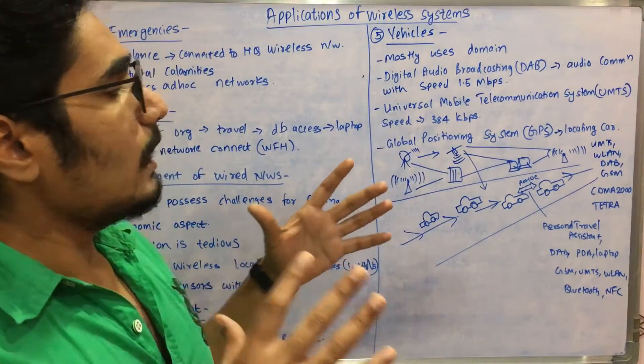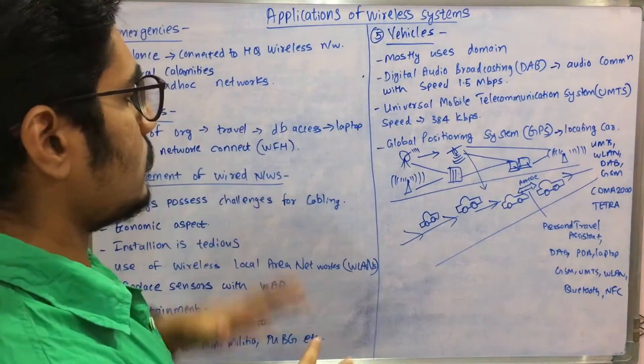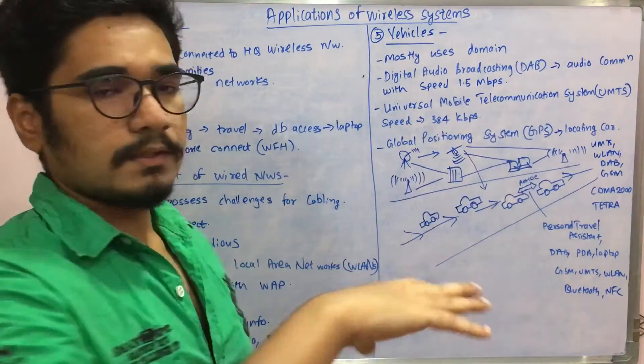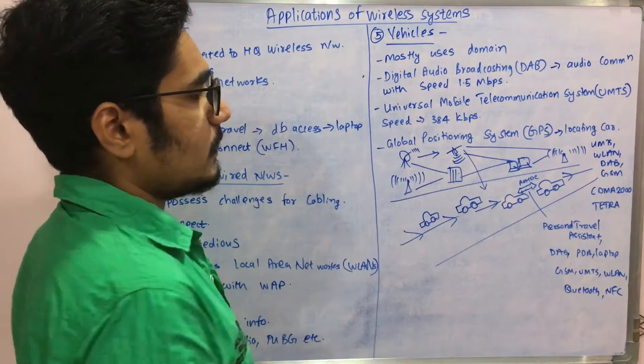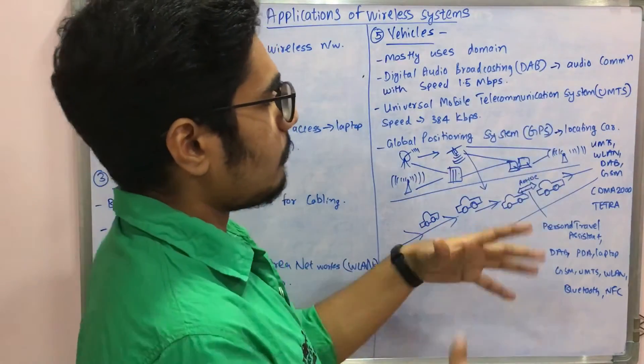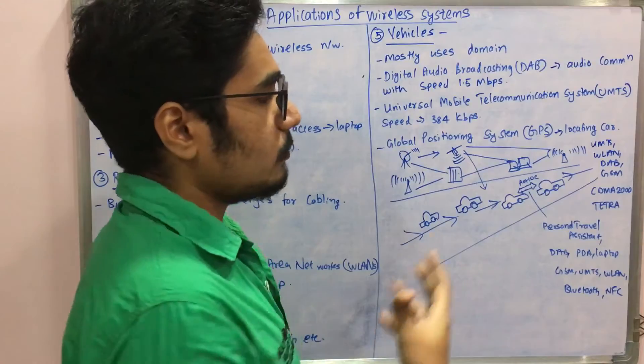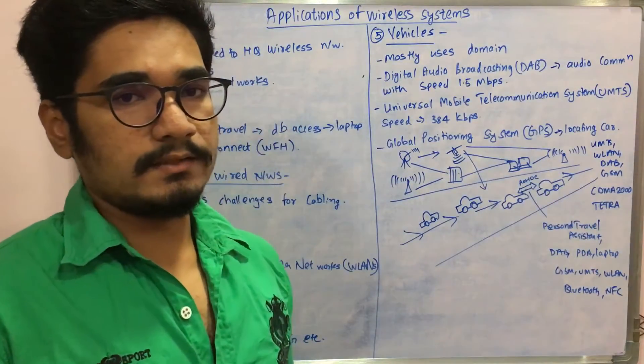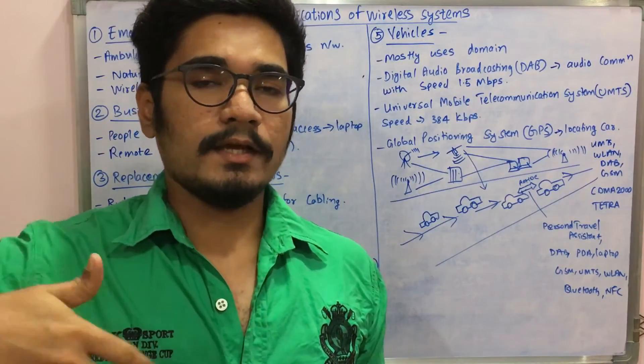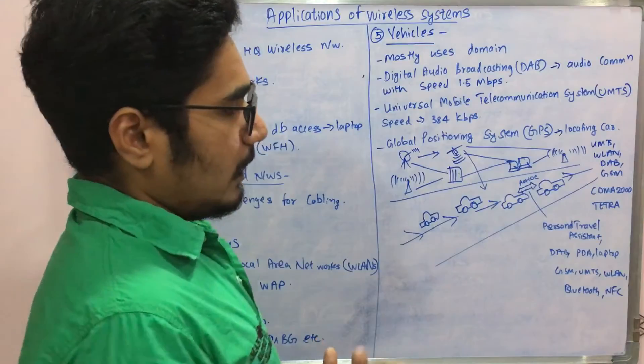Some scenarios of GPS working are as follows. This is an ad-hoc network like I discussed in emergencies. Devices would be connected here, and radio towers or mobile towers, even satellites, some base stations, servers, and workstations might be there, all connected with each other using technologies like UMTS, WLAN, DAB, GSM, CDMA (Code Division Multiple Access), and TETRA—terrestrial radio activity, a kind of radio communication which is dynamic, not static.